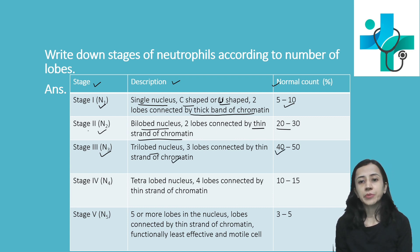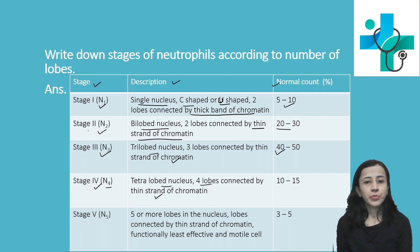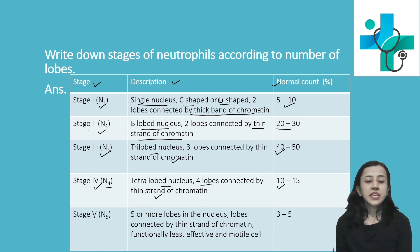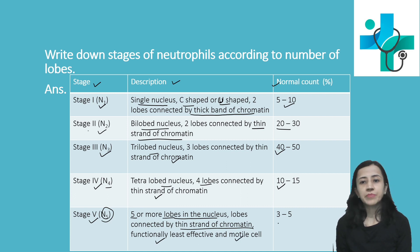Stage 3 normal count is 40 to 50%. Stage 4, termed N4, has a tetralobed nucleus with 4 lobes connected by thin strands of chromatin. Normal count is 10 to 15%. Stage 5, termed N5, has 5 or more lobes connected by thin strands of chromatin. These cells are functionally least effective and least motile, with a normal percentage of 3 to 5%.